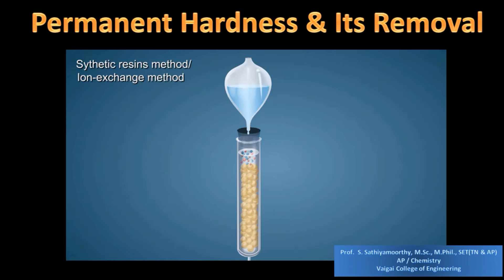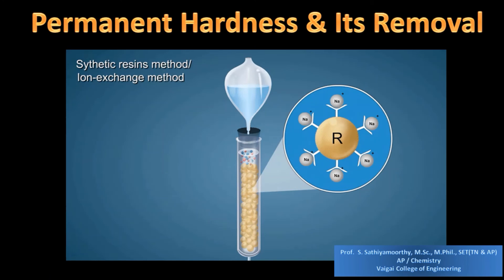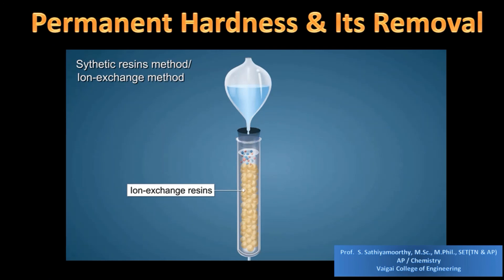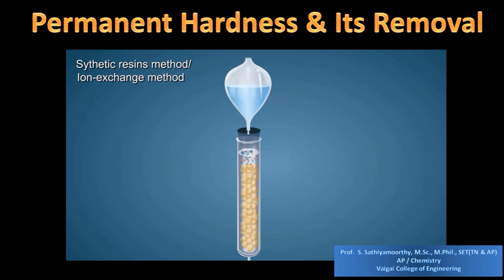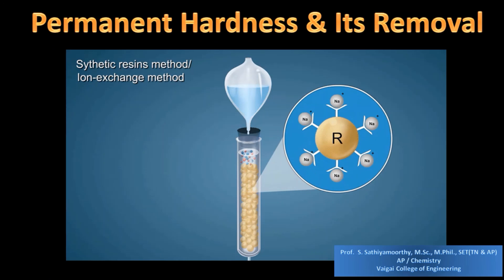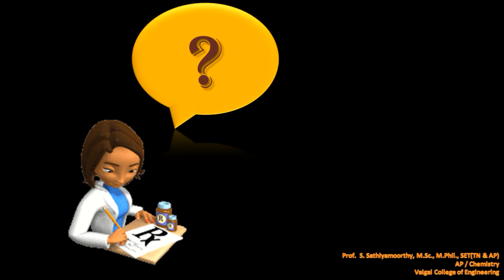Another method of removing permanent hardness is the synthetic resins method, also called the ion exchange method. The name itself describes everything — ion exchange resins are capable of exchanging their ions with the ions present in water. The harmful ions of water are exchanged by the ion exchange resins, which provide harmless ions to the water. Almost all the ions are removed, and finally what we get is deionized or demineralized water. By the ion exchange method, we can remove permanent hardness and also all ions present in the water.